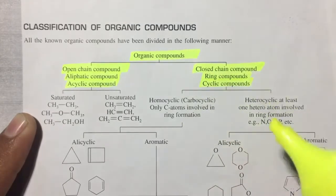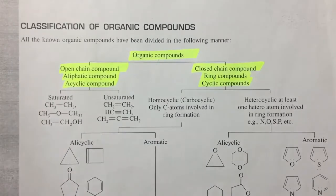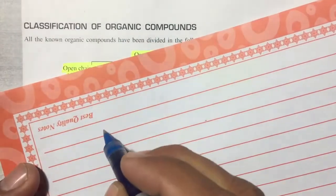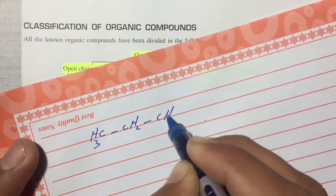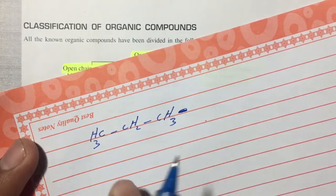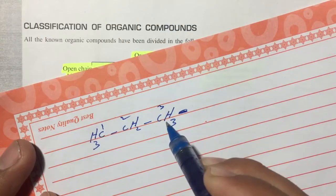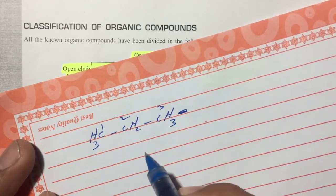In open chain carbon compounds, the first carbon and last carbon are not attached to each other. For example, if we write CH3-CH2-CH2, you can see the first carbon, second carbon, third carbon — the first and last carbon are not attached. This type of compound is called open chain.